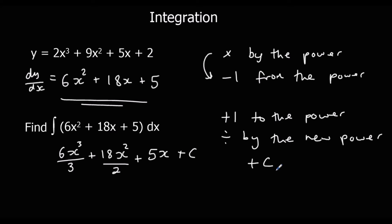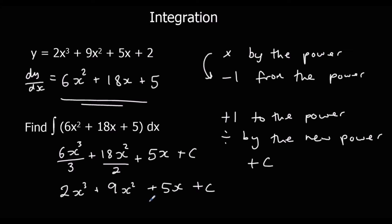So it's kind of like a third step for integration: add 1 to the power, divide by the new power, and plus c on the end. That c just represents any number that could have been there originally that will have disappeared when you differentiated it. So whenever you integrate, just remember plus c. Now we can simplify this: 6 over 3 is 2, 18 over 2 is 9, and then plus 5x plus c.